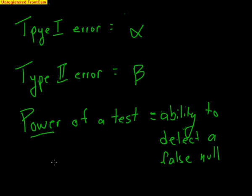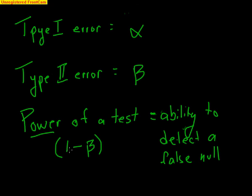Power is actually the complete opposite of beta. So power equals 1 minus beta — that is the power of a test. These three values — alpha, beta, and power (which is 1 minus beta) — all work with each other.